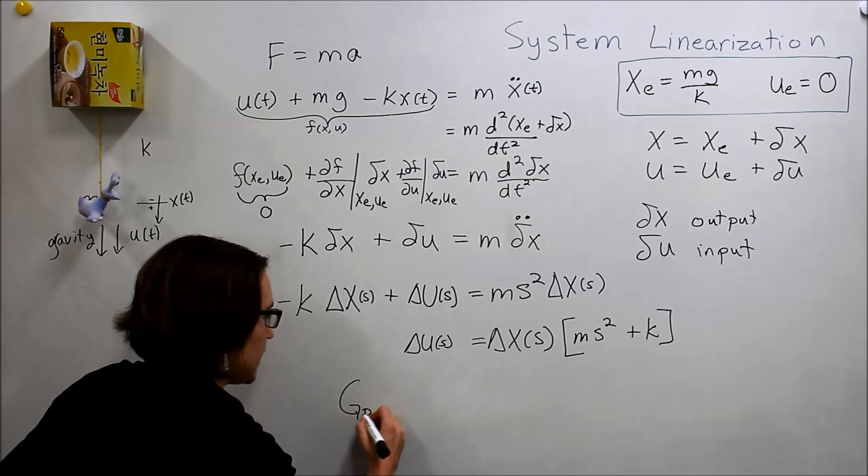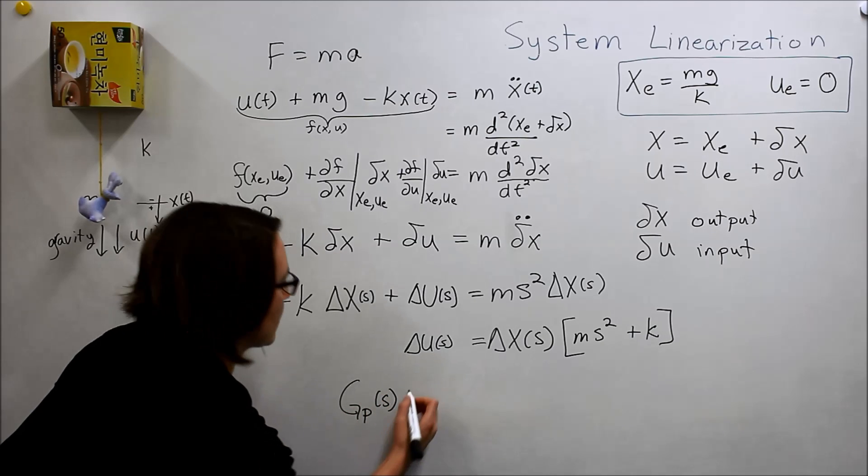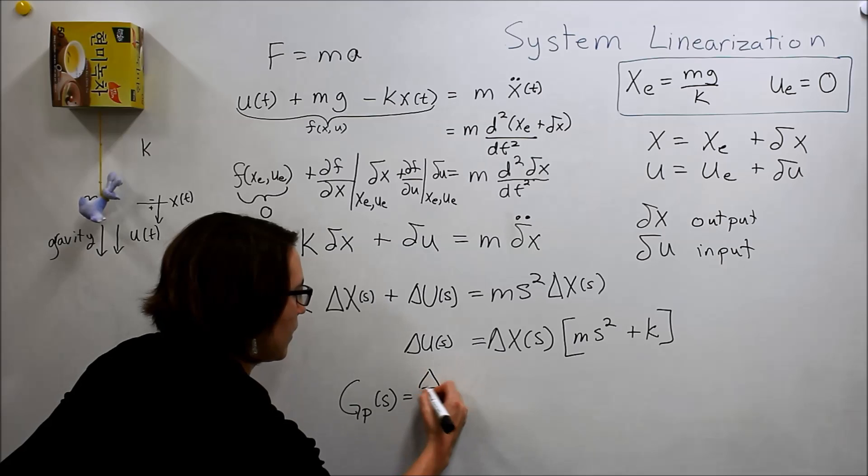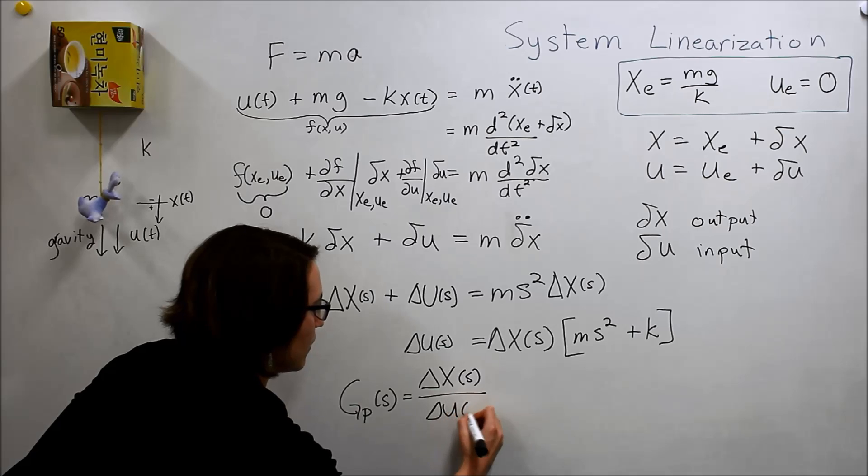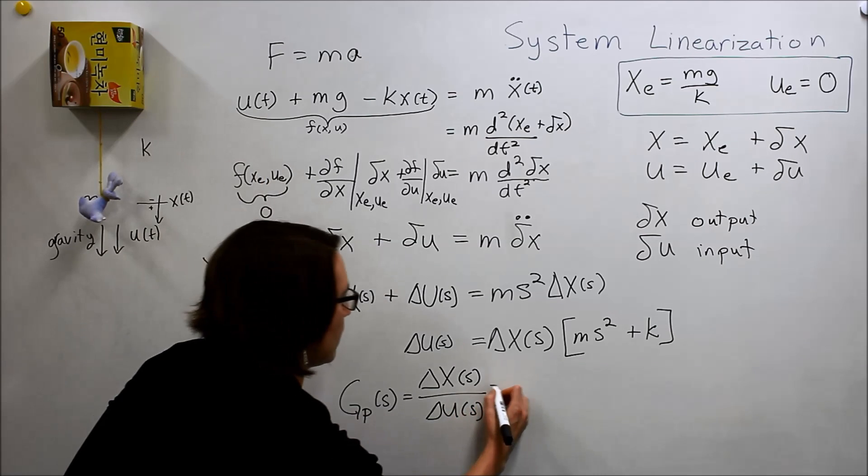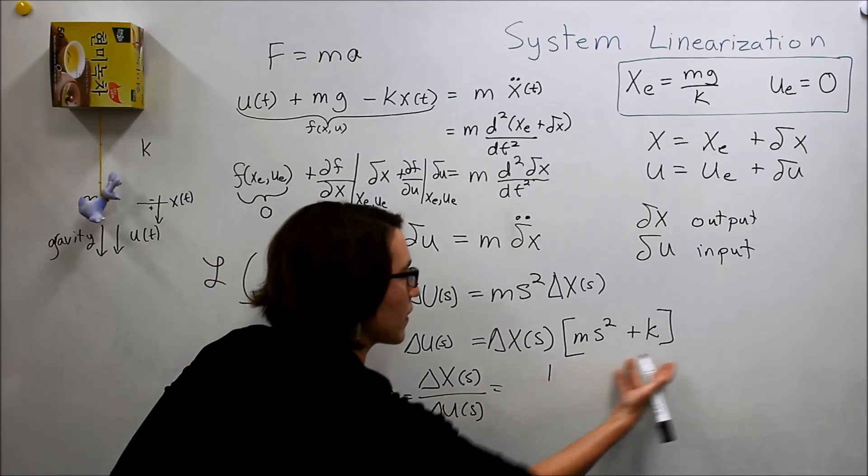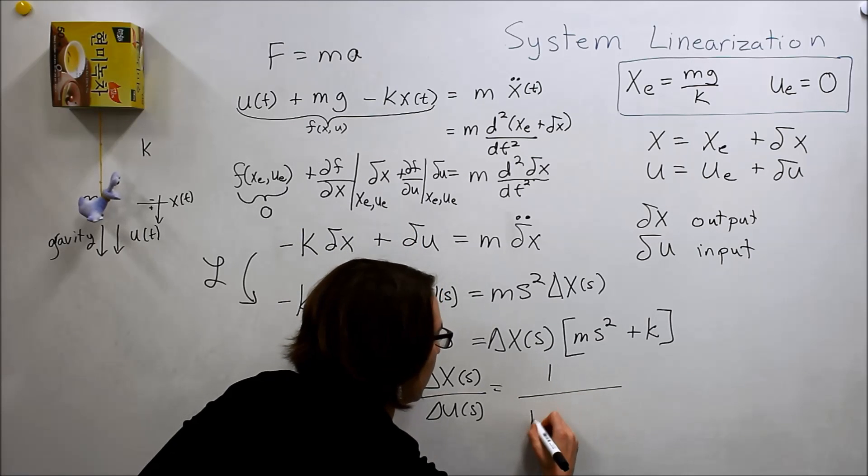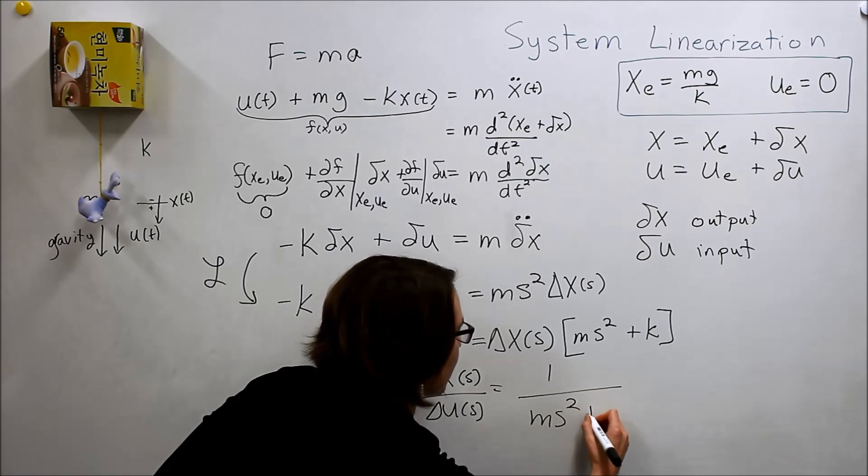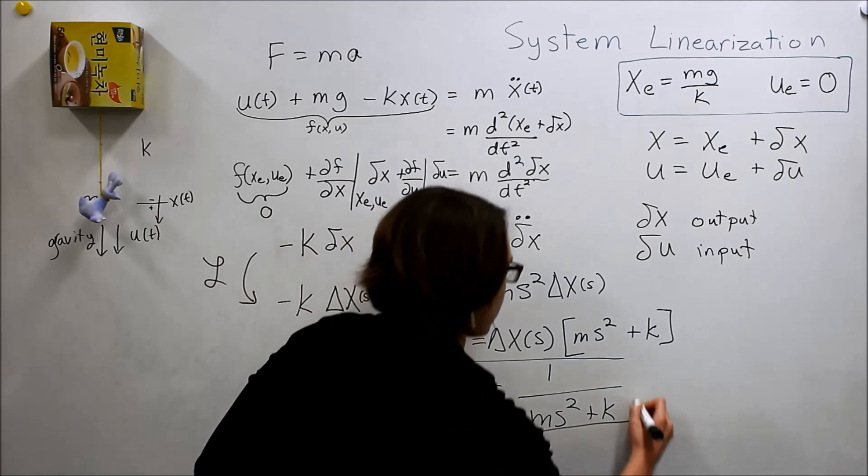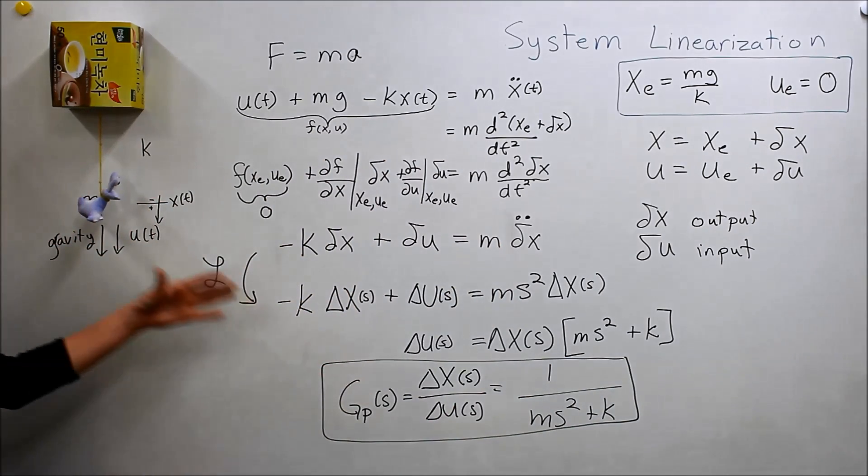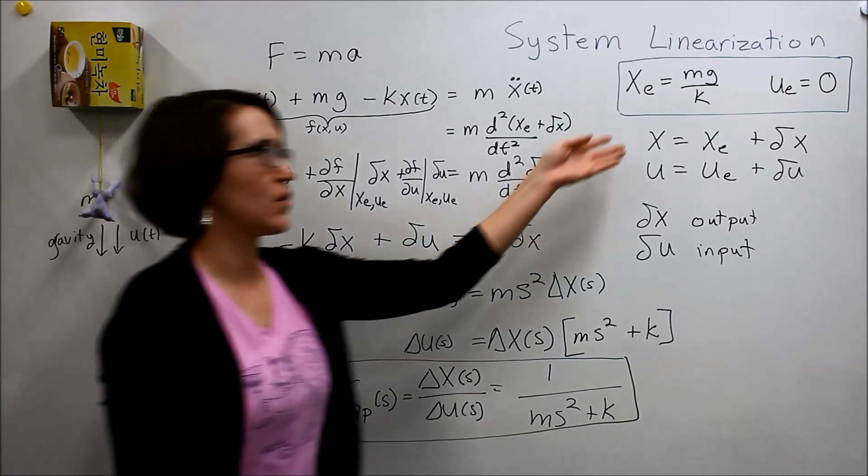We want to move that to that side. So, we get everything together. We'll get delta u of s equals delta x of s times m s squared plus k. And now, if we move these back around. So, now, this is our gp, our plant transfer function. And it's delta x of s over delta u of s equals 1 over m s squared plus k.